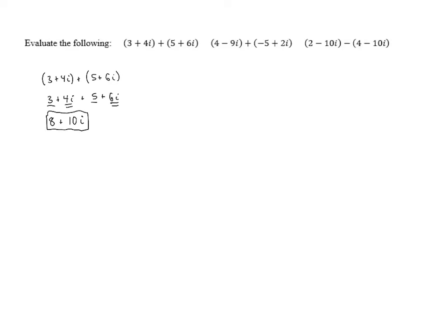Let's move on to the next one. Here we have 4 minus 9i plus negative 5 plus 2i. Again, we can remove the parentheses. There's nothing that needs to be distributed here. So those parentheses are just there to make it look nicer. So this is going to be 4 minus 9i. And then we can write minus 5 because adding negative 5 is the same as subtracting 5. So minus 5 plus 2i.